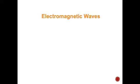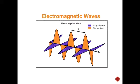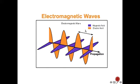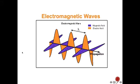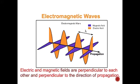The electromagnetic wave is a transverse wave that can travel through vacuum or through space. As shown, the magnetic field is perpendicular to the electric field, and both move in a third direction perpendicular to the direction of their propagation. The electric and magnetic fields are perpendicular to each other and perpendicular to the direction of propagation.